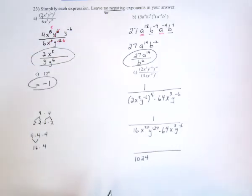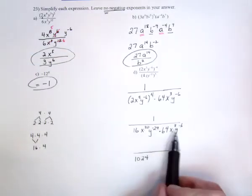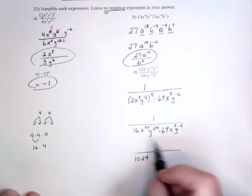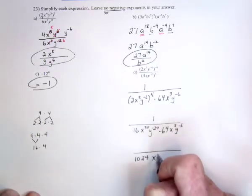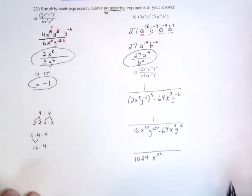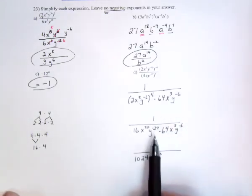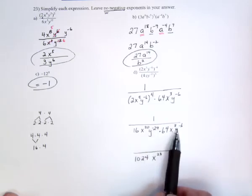1,024. 1,024 in the denominator. For x's, there's 20 of them here, and 3 of them there, so they're both positive. That means 23. x to the 23. And then, for y's, there's y to the negative 24, and y to the negative 6. So, when you combine those two, it makes y to the negative 30.